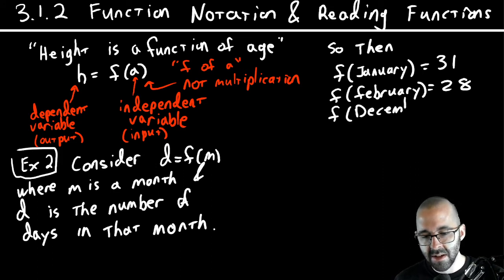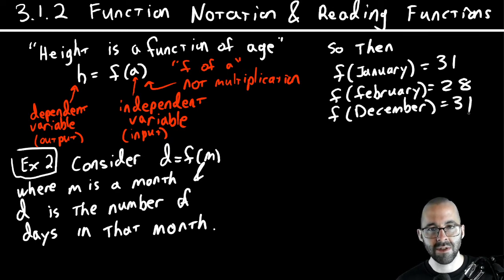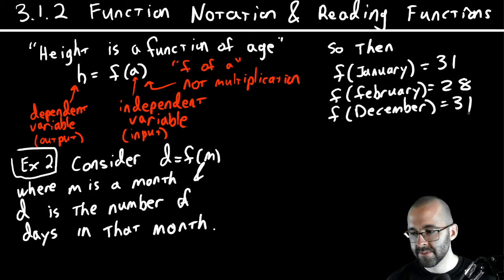f of December would also be 31, and so on. This is function notation. I give you an input, I give you a month, December. You give me an output, you give me a number of days, 31. And that's how we can kind of use all this together. Let's do another example.